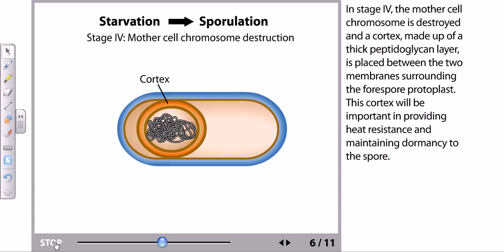This cortex will be important in providing heat resistance and maintaining the dormancy in the spore. Dormancy of forespore is the most important part, probably because this dormancy is the quality of spore that helps the spore to stay for a long time in the environment where the vegetative cell cannot be present for that much time. So vegetative cells if you put into dangerous environment, the harsh environment, it will die after some time, but if you put spore it can live. That is the ability of the spore, that is called the dormancy of the spore.